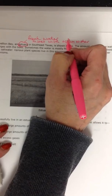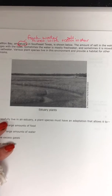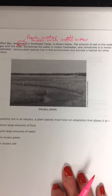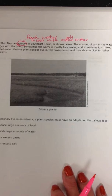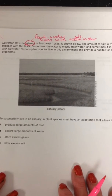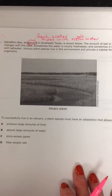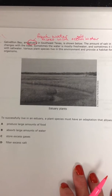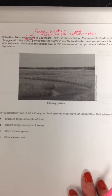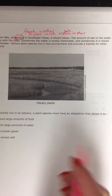Fresh water mixes with salt water — the ocean has salt water. We also said it was home to a whole bunch of organisms. Sometimes the water is mostly fresh water and sometimes it is mixed with salt water. Various plant species live in this environment and provide a habitat for other organisms. To successfully live in an estuary, a plant species must have an adaptation that allows it to do what?